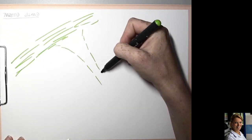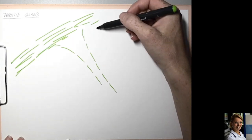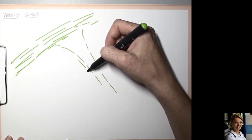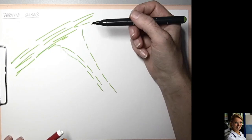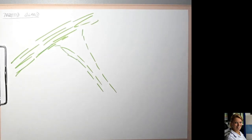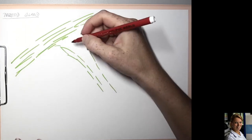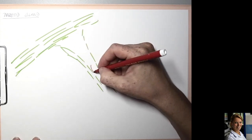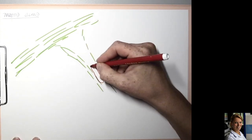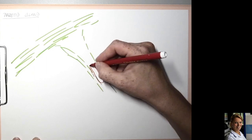These septa spread from the fibrous capsule and divide the parenchyma into lobules. The septa contain vessels which have smooth muscle cells in their wall.